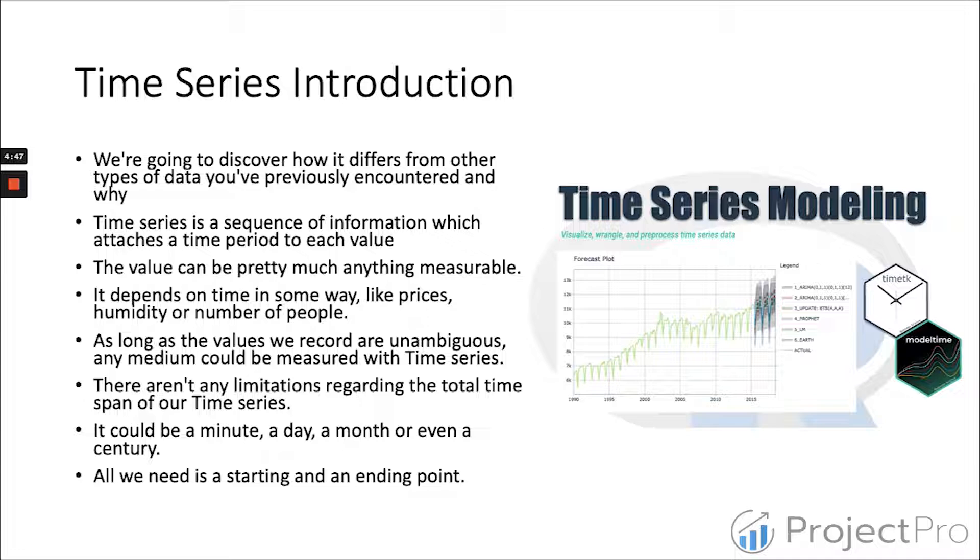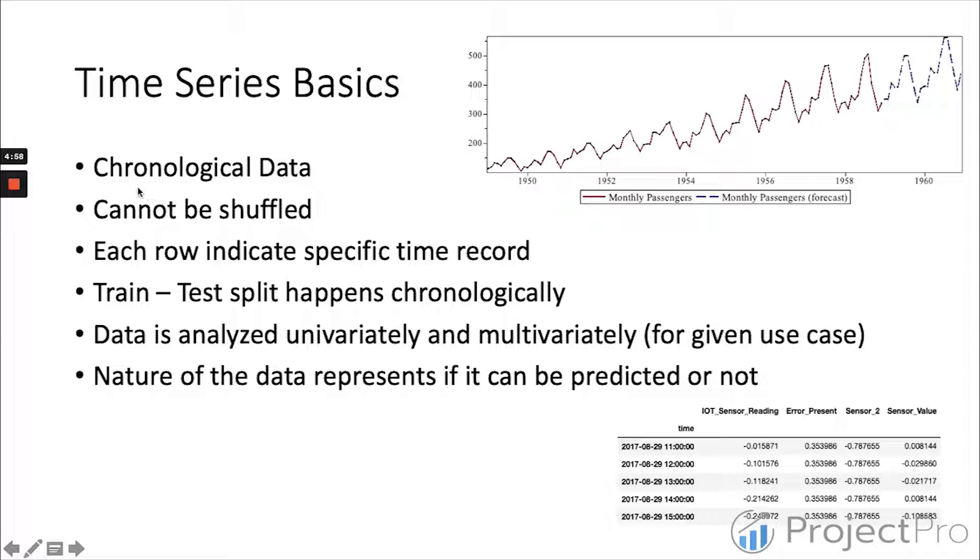Given the data is sequential and chronological, the data should start from some time period and then end till some time period. It shouldn't be like 1960 comes first and then 1950. Each row indicates a specific time period record. Train-test split happens chronologically - as you can see over the diagram, data before 1959 is used as training and after it is used for testing. We don't shuffle it, we just split it chronologically.